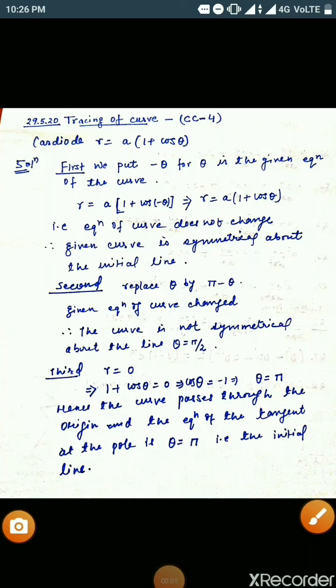Hello everyone, I am Dr. Abhakmadi. Today we will discuss some problems on tracing of curves. Earlier we discussed problems in Cartesian form, and today we will see how we can trace the curve for polar form. We have taken here the curve of the cardioid r equals a(1 + cosθ).